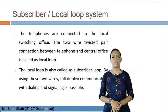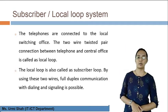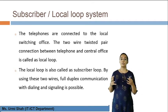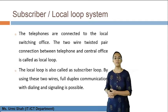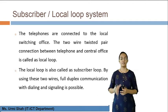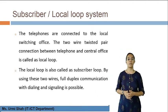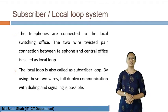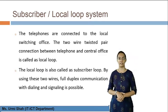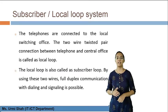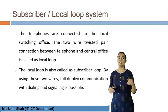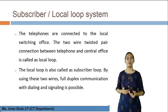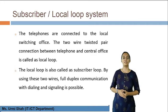The subscriber local loop system is the first topic in this unit. The telephones are connected to the local switching office. The two-wire twisted pair connection between the telephone and the central office is called the local loop, which is also called the subscriber loop. The name 'subscriber loop' comes from the fact that this loop is used by subscribers who are using telephone networks.